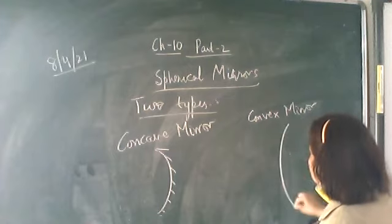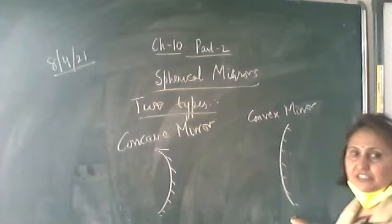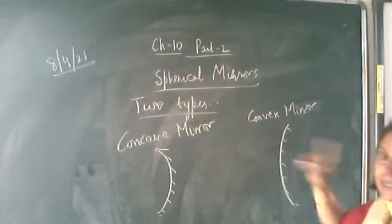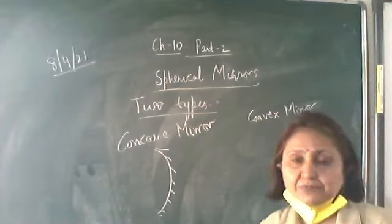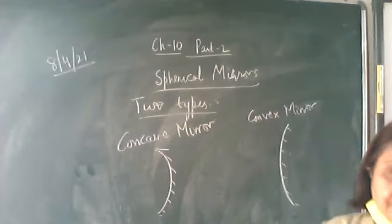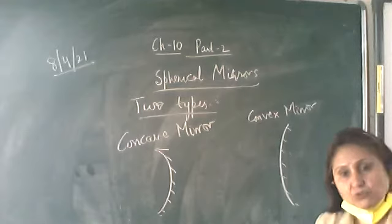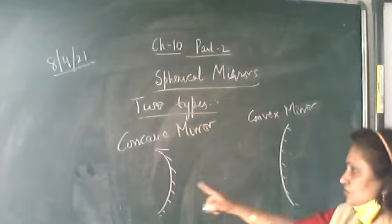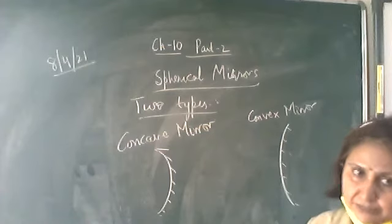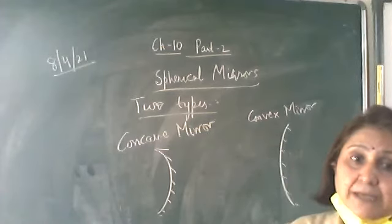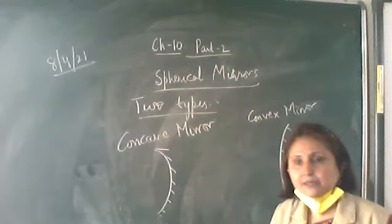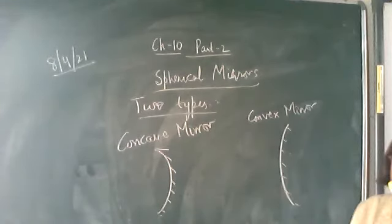The other type is the convex mirror, in which the outer surface — the bulged out surface — is the reflecting surface. The object has to be placed in front of the reflecting surface for the image to be formed. So these are the two types of spherical mirrors: concave mirror, in which the inner surface is the reflecting surface; convex mirror, in which the outer surface is the reflecting surface.